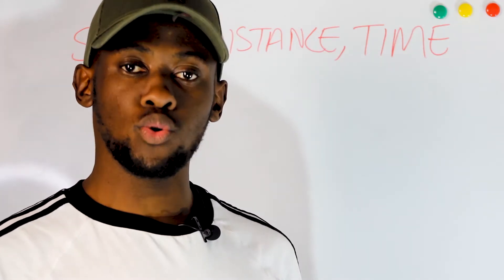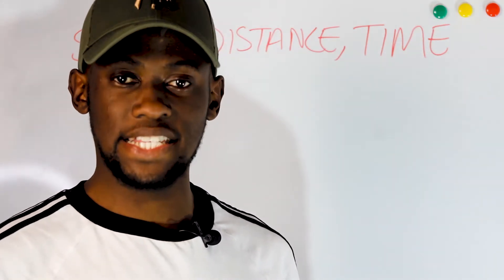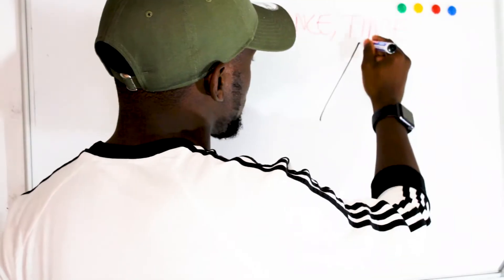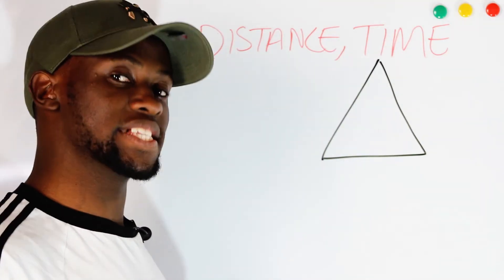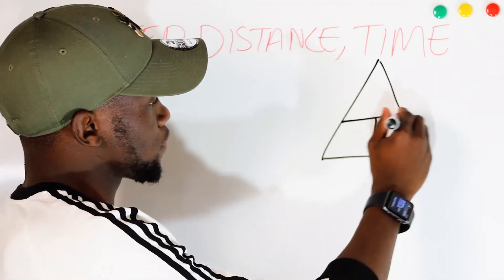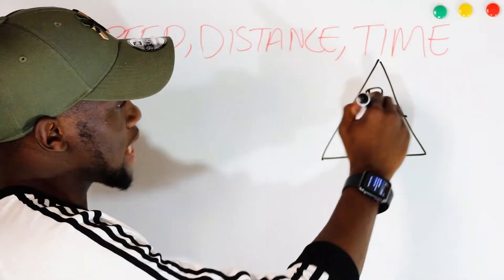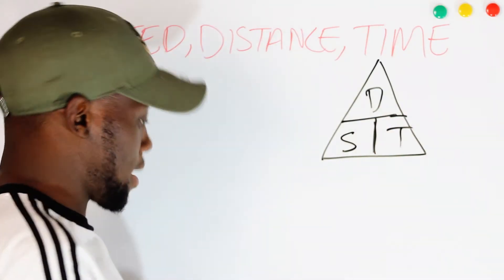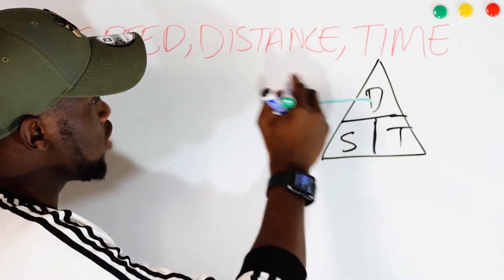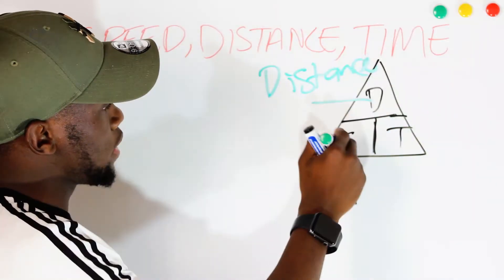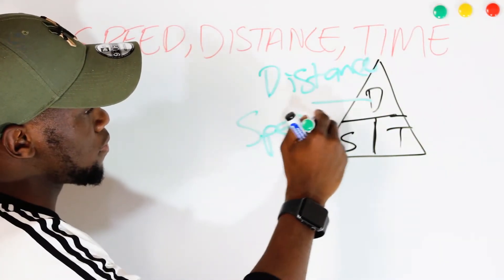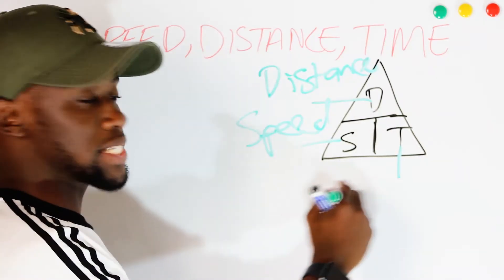We can begin this topic by simplifying the formula, then we can use a calculation to calculate distance, speed and time. An easy way to remember the formula is to create a triangle. This triangle will give us distance, speed and time — D for distance, S for speed and T for time.